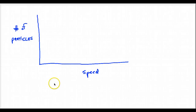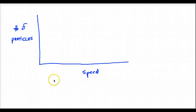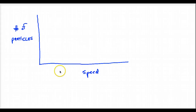I hope that visual helps. You saw that some molecules are going faster and slower, and therefore we're going to have a range of speeds. This is called a Boltzmann distribution graph, and what this is going to show is that range of speeds.